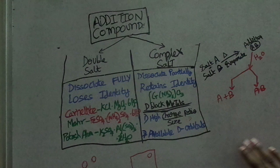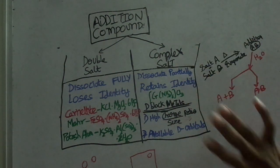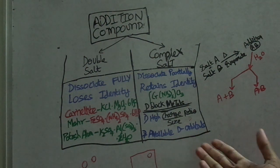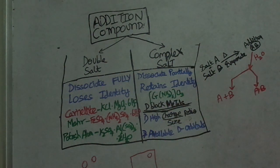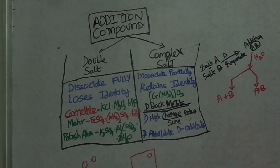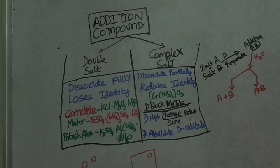We have coordination compounds — this is a complex and deep chapter. It covers shape, hybridization, and magnetic properties. This is an entire chapter on coordination compounds and it goes very deep.